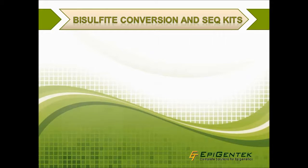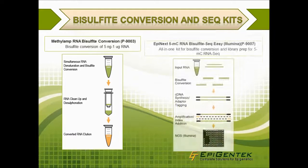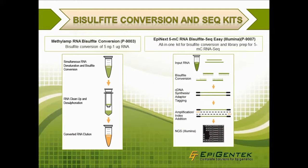We also offer the MethylAmp RNA bisulfite conversion kit, catalog number P9003, for bisulfite conversion of 5 nanograms to 1 microgram of RNA, as well as the EpiNext 5-MC RNA bisulfite-seq easy kit, catalog number P9007, which is an all-in-one kit for bisulfite conversion and library preparation for 5-MC RNA-seq.